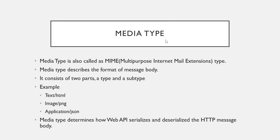First of all, we are going to understand what is media type. Many of you may be aware of this term — media type is also called as MIME type. Basically it describes the format of your message body, meaning what kind of data is present in your message body. It specifically contains two parts: type and subtype. These are a few examples like text/html, image/png, application/json, or application/xml. You might have observed this media type in your request header.